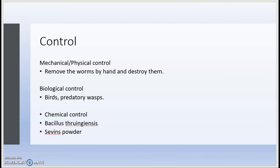Another control method is using chemicals such as Bacillus thuringiensis and Sevin's powder. Chemical control should be used as a last resort. Of these two, Sevin's powder is more toxic compared to Bacillus thuringiensis. But in either case, you should be careful when applying and wear protective clothing.